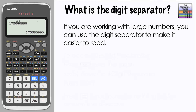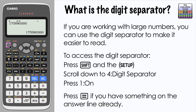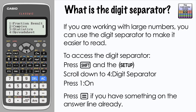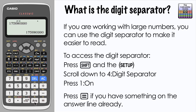To access the digit separator and turn it on, press Shift and then Setup, and navigate down to 4 — digit separator — and then press 1 to switch that on. If you already have a number on the answer line, you just need to press equals again to engage the digit separator.